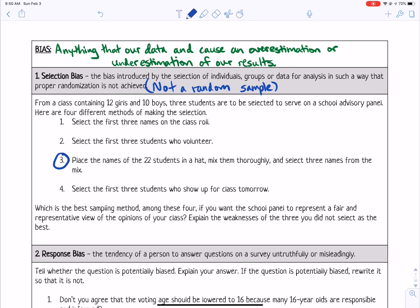Selecting the first three names on the class roll is not random. That is convenient, we would call it. Number two, selecting the first three students who volunteer is usually only going to be outspoken students, which is not a fair representation of all students. So let's put only outspoken students will volunteer.